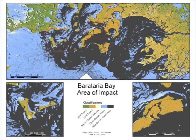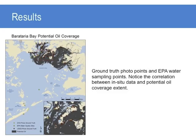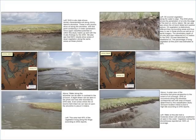The two main areas of impact are seen in a mosaic from flight lines 22, 202, and 32017 from June 23, 2010. These classifications were compared to the AVIRIS, Galileo Group data, DHS field surveys, and the USGS field report. Ground truth photo points from DHS and USGS were plotted and also included EPA water sampling points to study the relationship between in-situ data and potential oil coverage extent. DHS field photographs were plotted in the Barataria Bay location and compared to the land and oil spill classifications from the UAV SAR data.